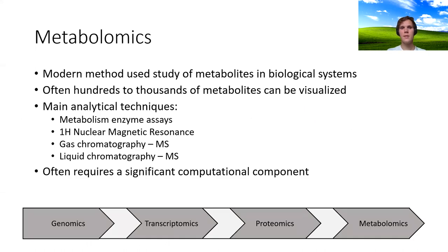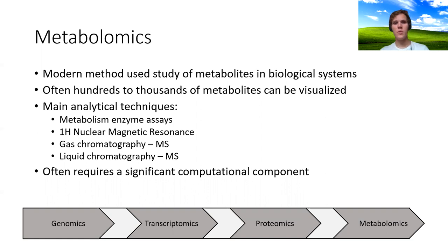What is metabolomics? Metabolomics is the modern method used to study metabolites in biological systems. Often hundreds to thousands of metabolites can be visualized at any given time point. The main analytical techniques used for metabolomics are classic metabolism enzyme assays, 1H NMR or nuclear magnetic resonance, gas chromatography mass spectrometry (GCMS), or LCMS. These studies often require a significant computational component because those gigabytes of data don't tend to analyze themselves.